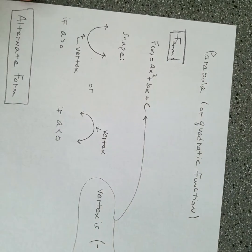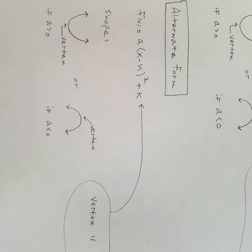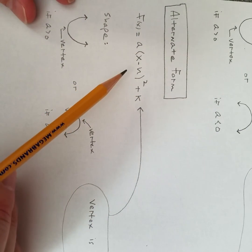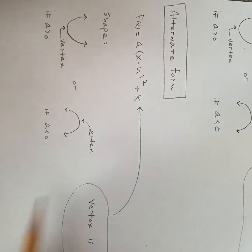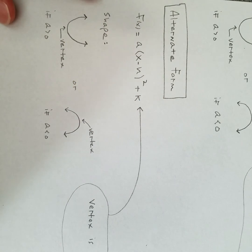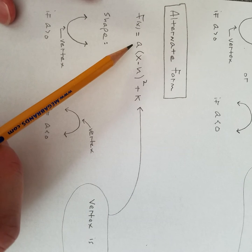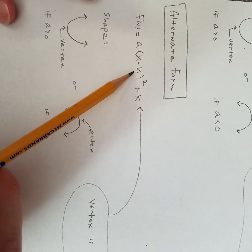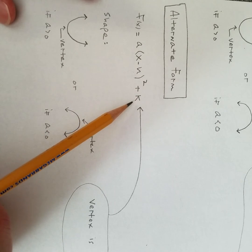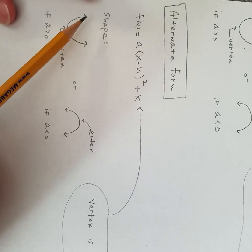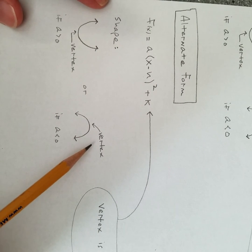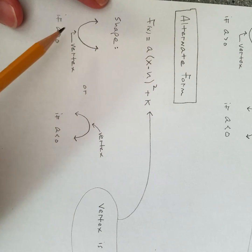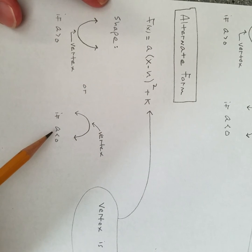Now that's reviewed, let's cover another form. When you do the assignments and look in the book, there's another form you come across, and it wouldn't be right to leave it out entirely. I didn't want to give you all the formulas at once, so I'm breaking it up. The alternate form is: a times (x minus h) all squared plus k. That's also a parabola — it will have either an opening-up or opening-down shape with a vertex, depending on whether the leading number is positive or negative.